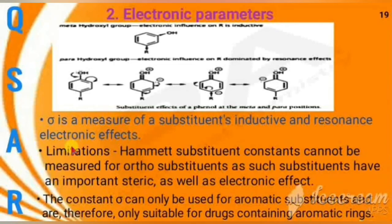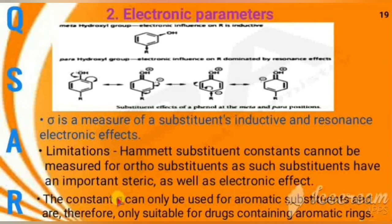A main limitation is that the Hammett substituent constants cannot be measured for ortho substituents, because such substituents have important steric as well as electronic effects. This constant can only be used for aromatic substituents and is therefore only suitable for drugs containing aromatic rings.